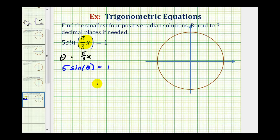Which will give us the equation 5sinθ = 1. So we'll solve this equation for θ and then come back and solve for x.